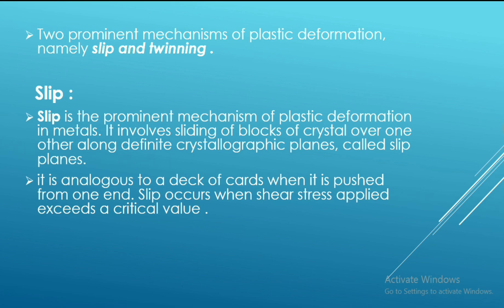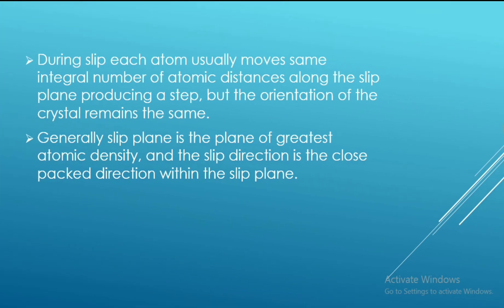Slip is the prominent mechanism of plastic deformation in metals. It involves sliding of blocks of crystal over one another along definite crystallographic planes, called slip planes. It is analogous to a deck of cards when pushed from one end. Slip occurs when the shear stress applied exceeds a critical value. During slip, each atom usually moves the same integral number of atomic distances along the slip plane, producing a step, but the orientation of the crystal remains the same. Generally, the slip plane is the plane of greatest atomic density, and the slip direction is the close-packed direction within the slip plane.